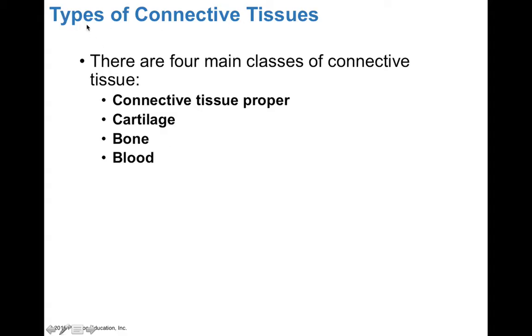There are four major types of connective tissues in the body: connective tissue proper, cartilage, bone, and blood. In the following slides, we're going to go into the major categories of each.